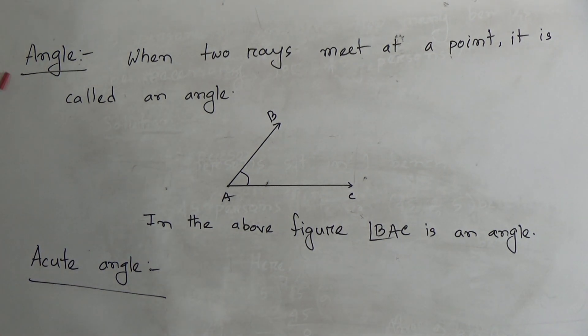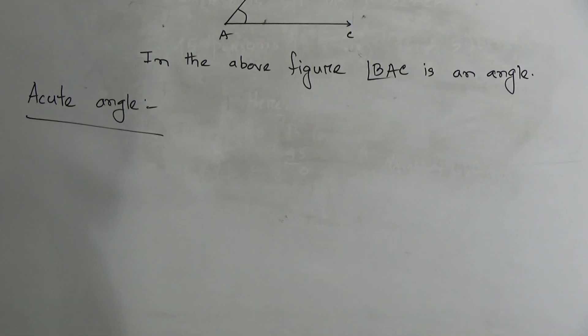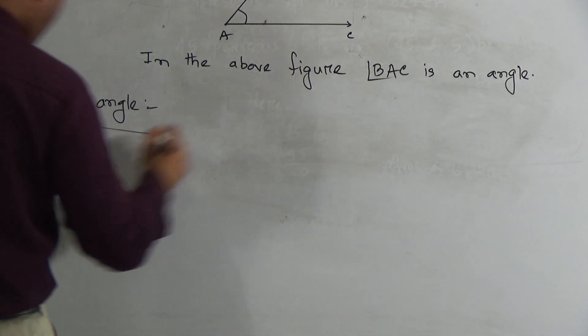So here BAC is an angle my students. Hope you understood the definition of angle. Now go to the next one which is acute angle.